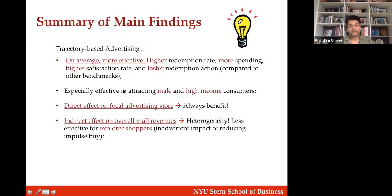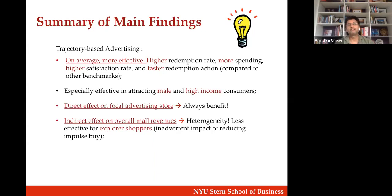To summarize the main takeaways: this was the first real-world execution of trajectory-based targeting. Our hypothesis was that trajectory gives more information and these algorithms should perform better than location-based targeting — and we did find that, with higher redemption rates, more spending, and more satisfaction. There are interesting demographic differences between gender and income. High-income customers with high customer lifetime value tend to be more responsive to these offers. The focal stores always benefit, and overall mall revenues are higher as well. On average, this is done in a more efficient way — spending less time.